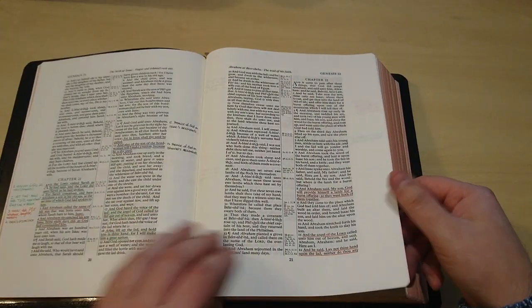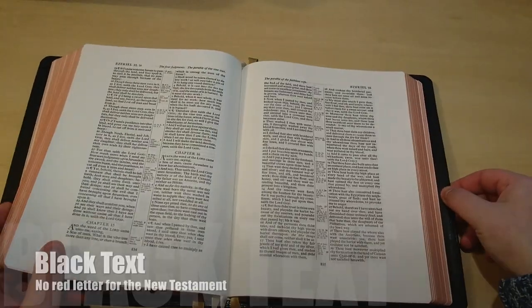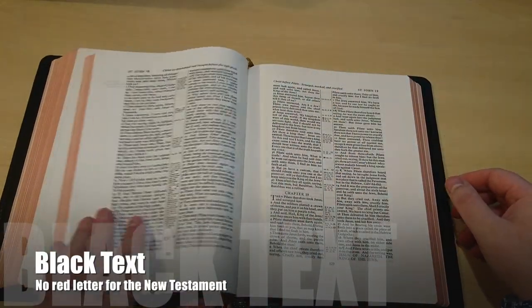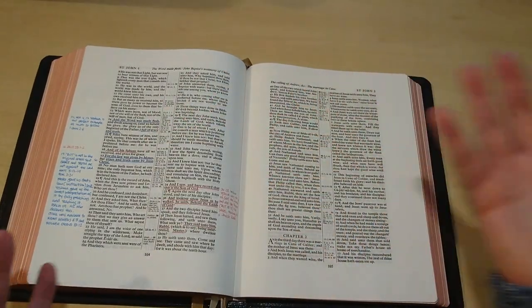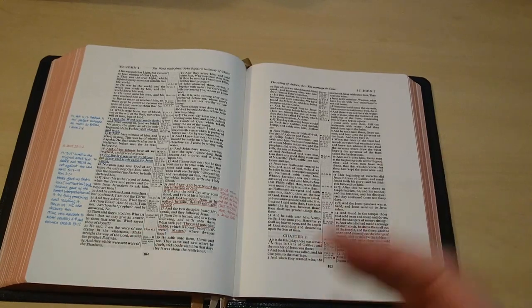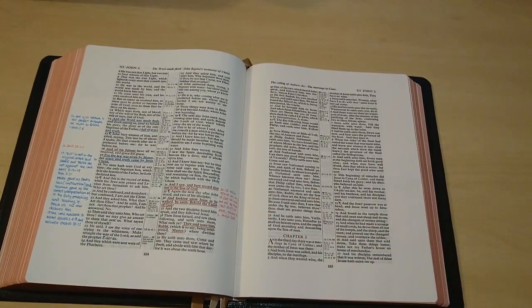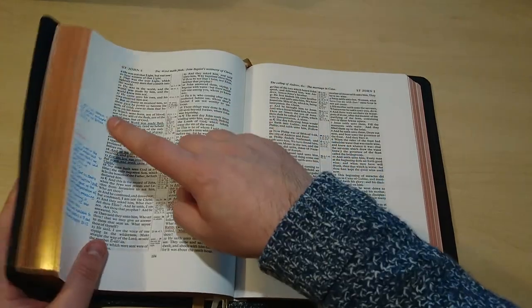Now this Bible is a black text—it's not a red letter. So if we go to the New Testament, you're gonna see that everything is black. Some people prefer it, and I don't really mind, but that's the case on this edition. It doesn't come with red letter, as you can see.